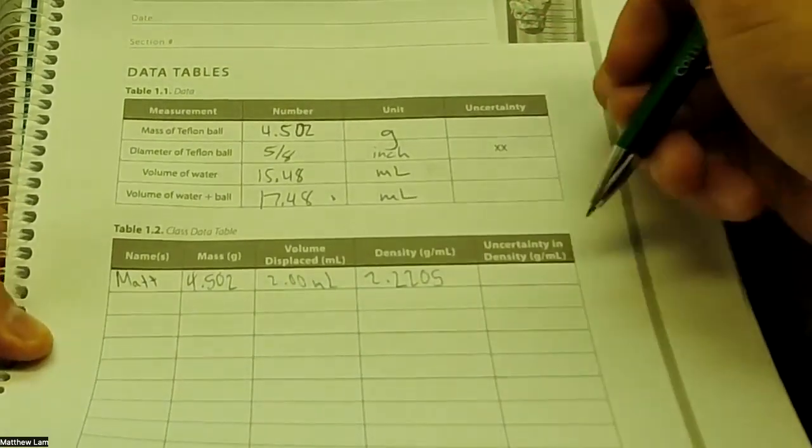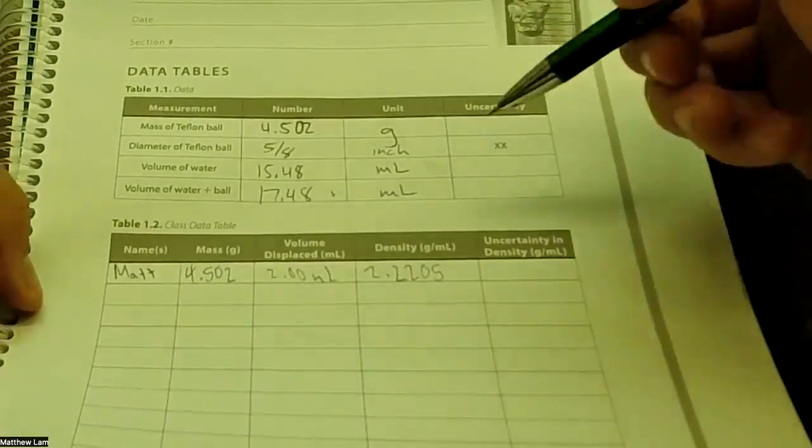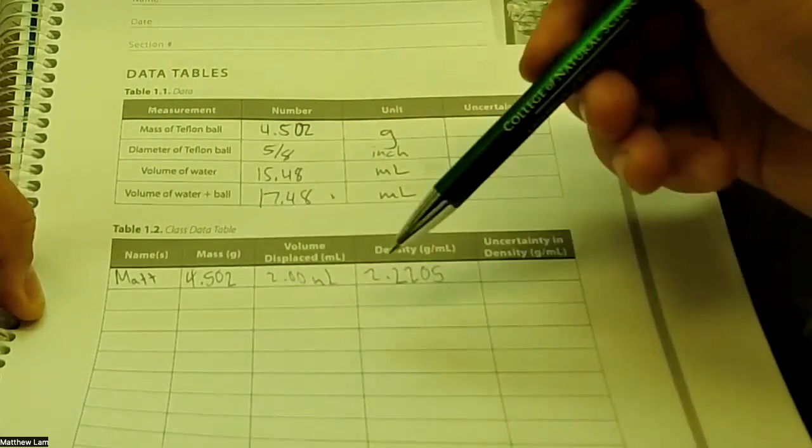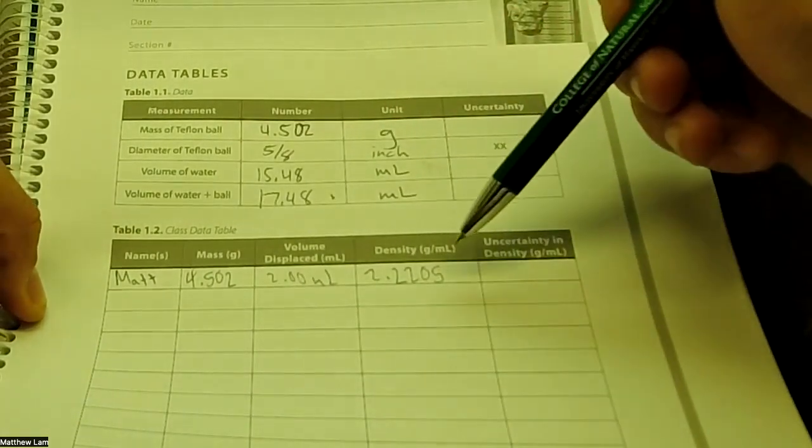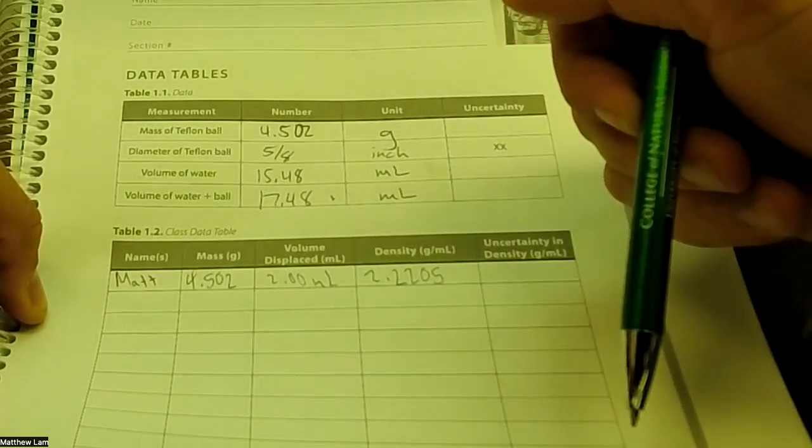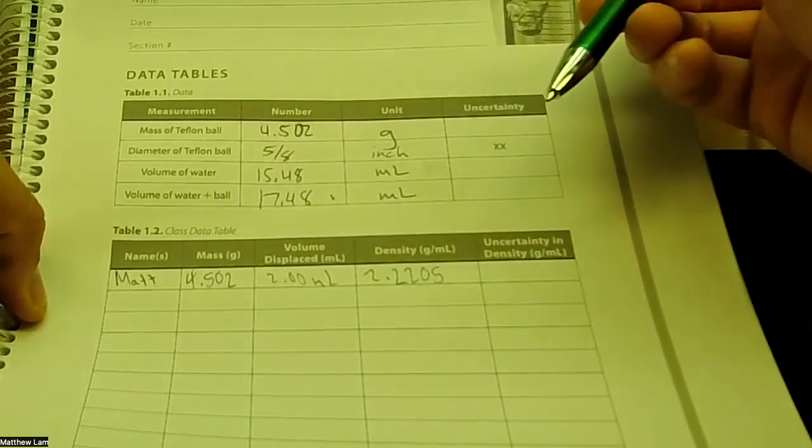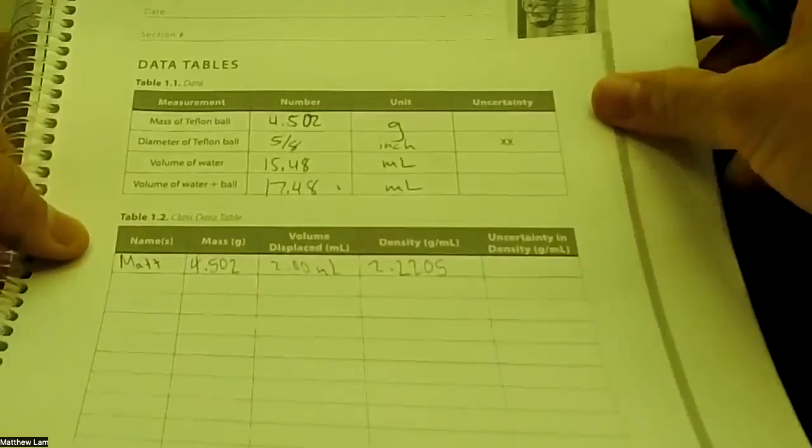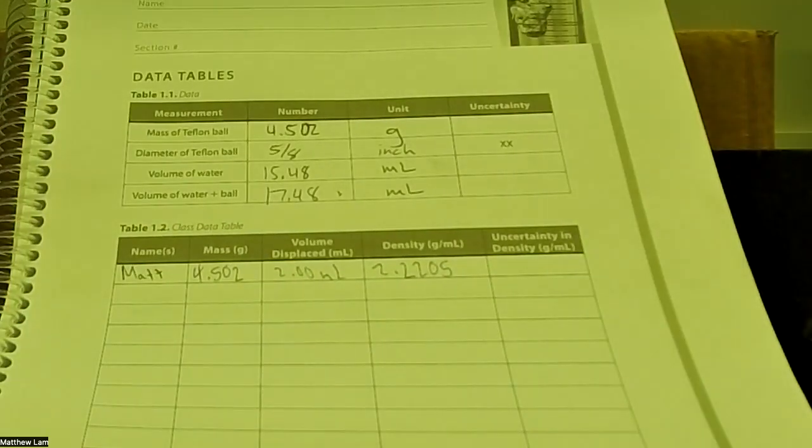And then your TA can show you how to do uncertainty. Now your TA should give you class data for this so that you can determine the densities for your whole class and the uncertainty value. So you can do the second part, the Excel part, for this experiment. That is it for this experiment. If you have any questions, please ask your TA. Thanks.